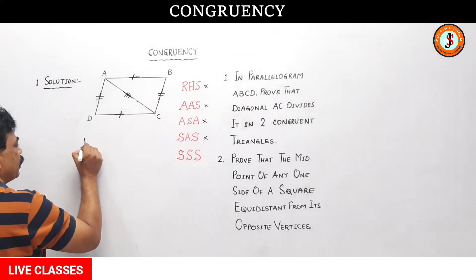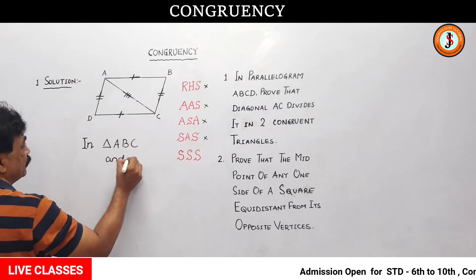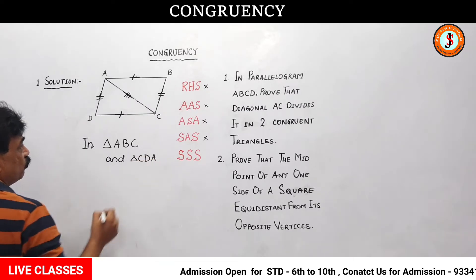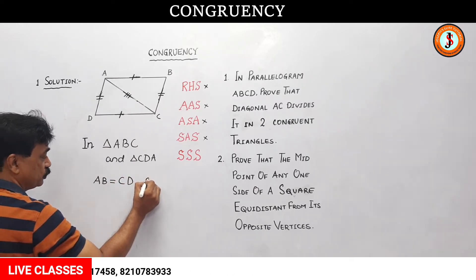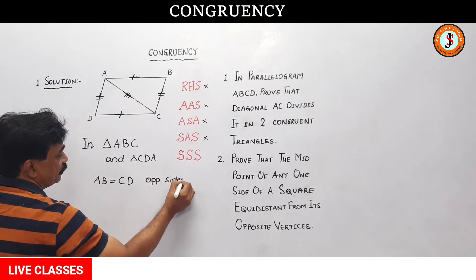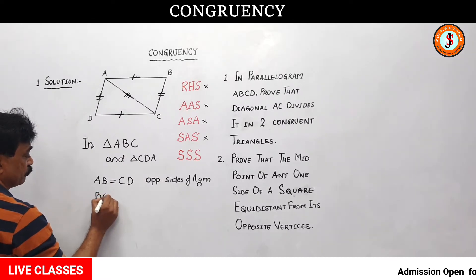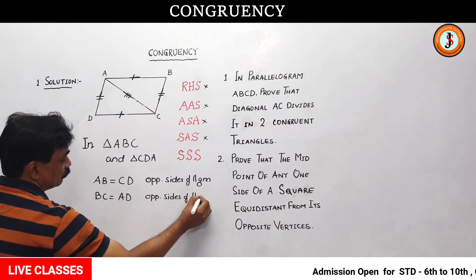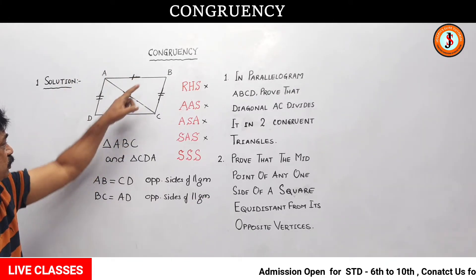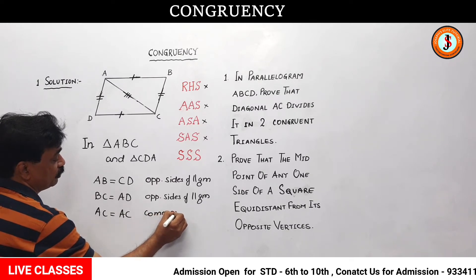So first we should write what we are proving. In triangle ABC and triangle CDA: AB is equal to CD — opposite sides of the parallelogram. BC is equal to AD — opposite sides of parallelogram ABCD. And AC is equal to AC — common side, common to both triangles.